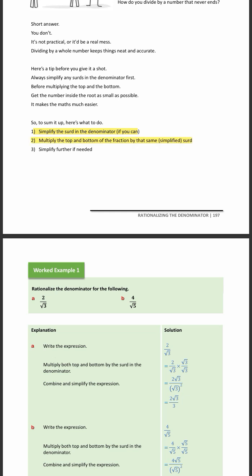The second step is to multiply the top and the bottom of the fraction that you've got by that same simplified root in the denominator. And then the last step is to simplify the fraction further if you need to.